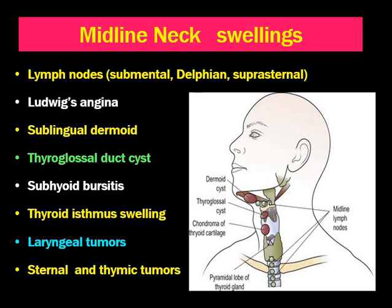Swelling of the thyroid isthmus and pyramidal lobe may occasionally present in the midline. This swelling moves on deglutition but not on protrusion of the tongue, as thyroid swellings move on deglutition. Sometimes laryngeal tumours may also occur in the midline when they erode the thyroid cartilage, but that is a very rare presentation. Sternal and thymic tumours may also occasionally present in the midline neck.